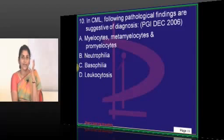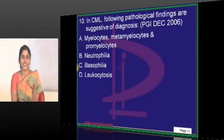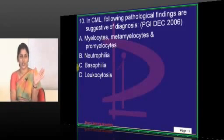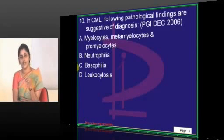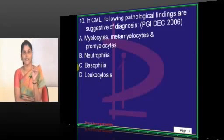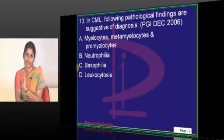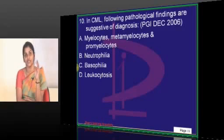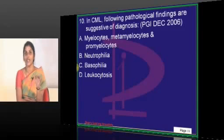CML management changed significantly about a decade ago with the detection of a specific drug. For other malignancies, chemotherapy is used for a period of time, followed by radiotherapy or surgery. For CML, imatinib mesylate, a tyrosine kinase inhibitor, has to be given throughout the patient's life — as long as the patient is responding well, is not resistant to therapy, and is not developing any complications.